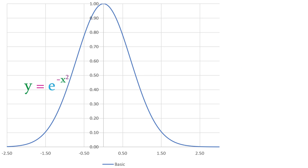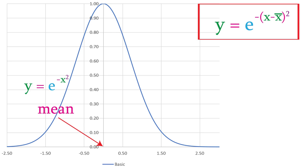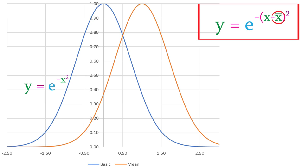This curve has a few properties that will be useful for us to know about. The first of these is the mean. Right now, the curve has a mean of zero, but a real quantity such as the velocity may not have a mean of zero. In order to make the mean something else, we need to change the equation. The mean is x-bar, so when we put in a value for x-bar, the distribution shifts to the left or right. For example, here's what we'd get if we used 1 for the mean.